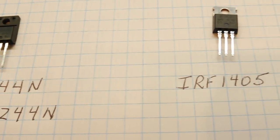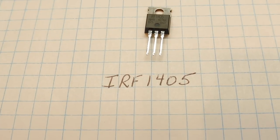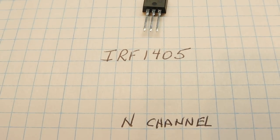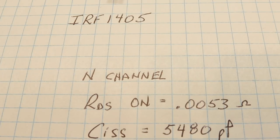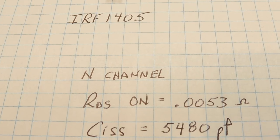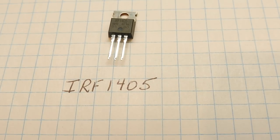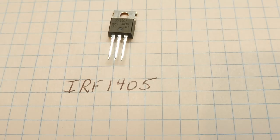The other MOSFET I use is the IRF-1405. This is not a logic level MOSFET, so you have to drive the gate to source with 10 volts to drive it fully on. It's an N-channel MOSFET. The RDS (drain to source on resistance) is 5.3 milliohms, and the CISS (gate to source capacitance) is 5480 picofarads. The IRF-1405 is an automotive spec power MOSFET. I like using automotive specs in all my projects — that's our worst case design, which is why I picked the IRF-1405.